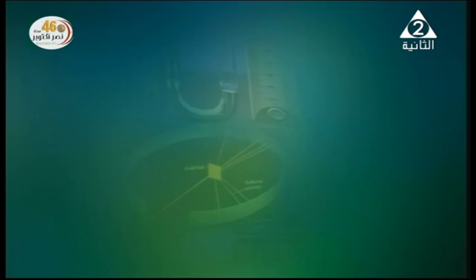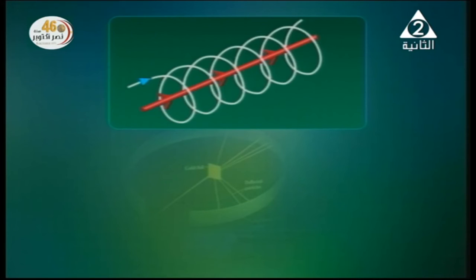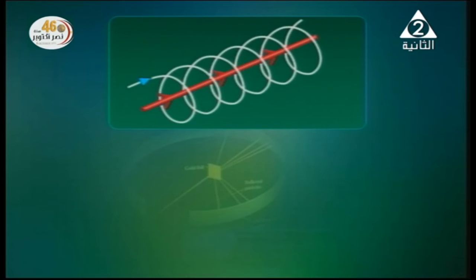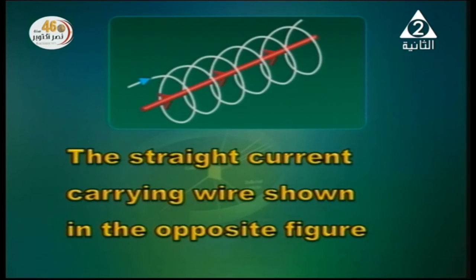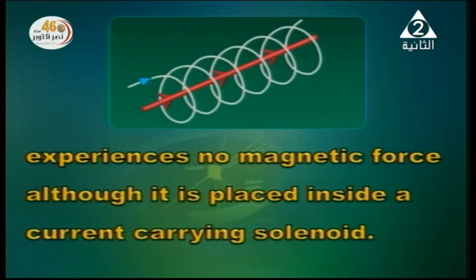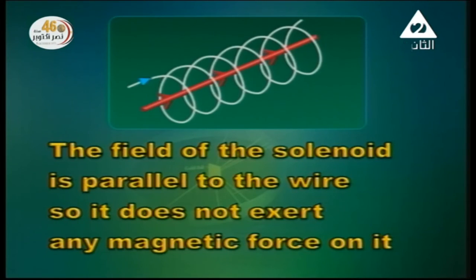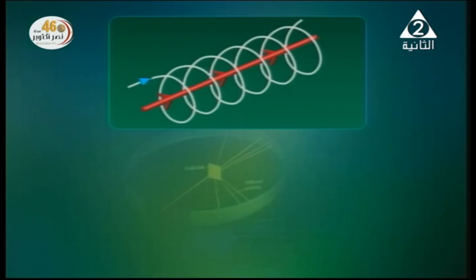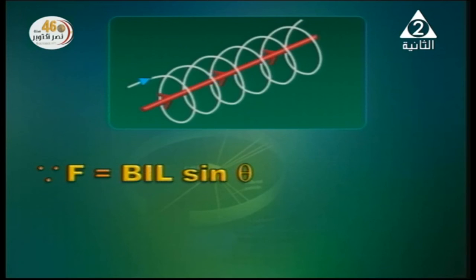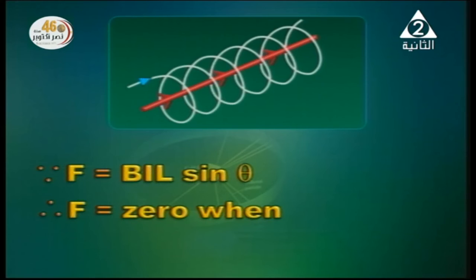A straight current-carrying wire is placed inside a current-carrying solenoid but experiences no magnetic force. Why? Simply because the field of the solenoid is parallel to the wire — field lines are parallel to the wire. The force is determined from F = B I L sin theta, and the force equals zero when theta — the angle between flux lines and the wire — is zero.